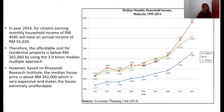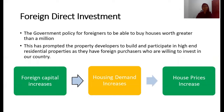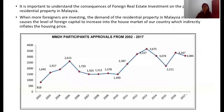Another reason that causes housing prices to increase beyond affordability is foreign direct investment. The government policy for foreigners enables them to buy houses worth greater than a million, which has prompted property developers to build and participate in high-end residential properties, as they have foreign purchasers willing to invest. When more foreigners are investing, the demand for residential property in Malaysia increases, causing the level of foreign capital flowing into the housing market to increase, which indirectly inflates housing prices.